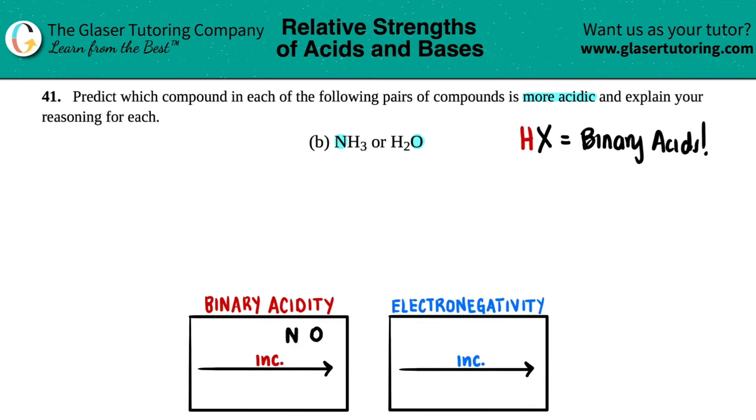So in this case, H2O would be more acidic. That's a cool trend to memorize - it's an easy answer, but now you have to explain the reasoning. The reasoning behind it comes from the electronegativities between the two.